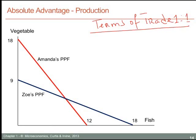How do we get to this exchange rate of one-to-one? Is this the only exchange rate, or the only set of terms of trade, that would enable these two individuals to benefit? To justify the choice of an exchange rate of one-to-one, let's look at the production efficiencies of each of the two individuals in this example.